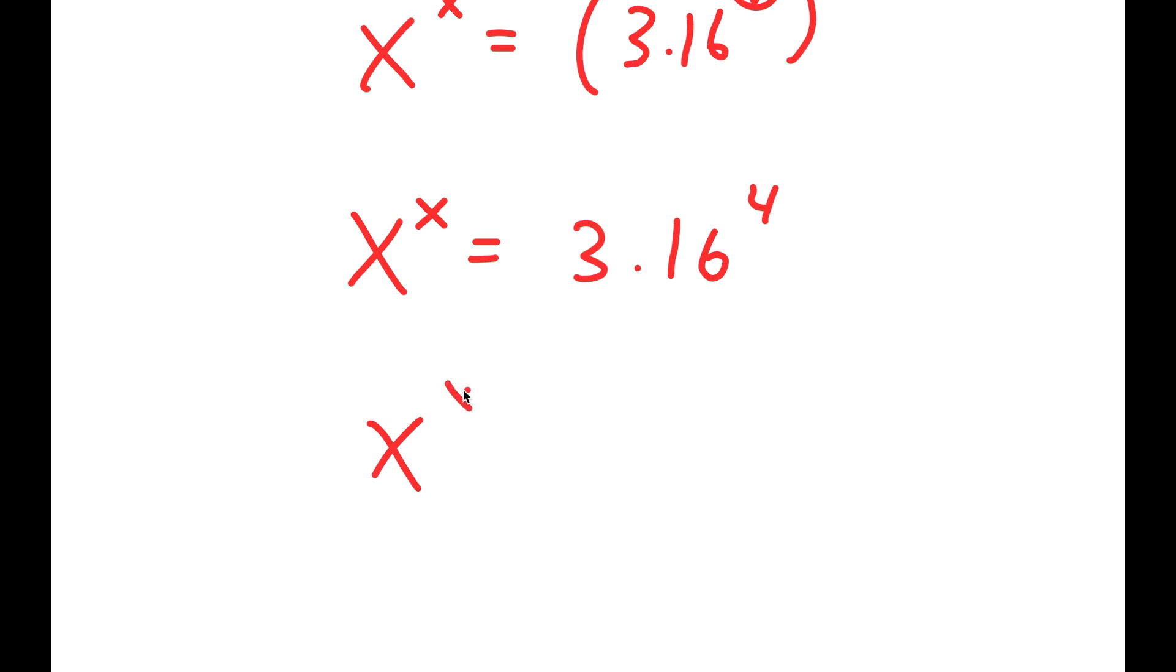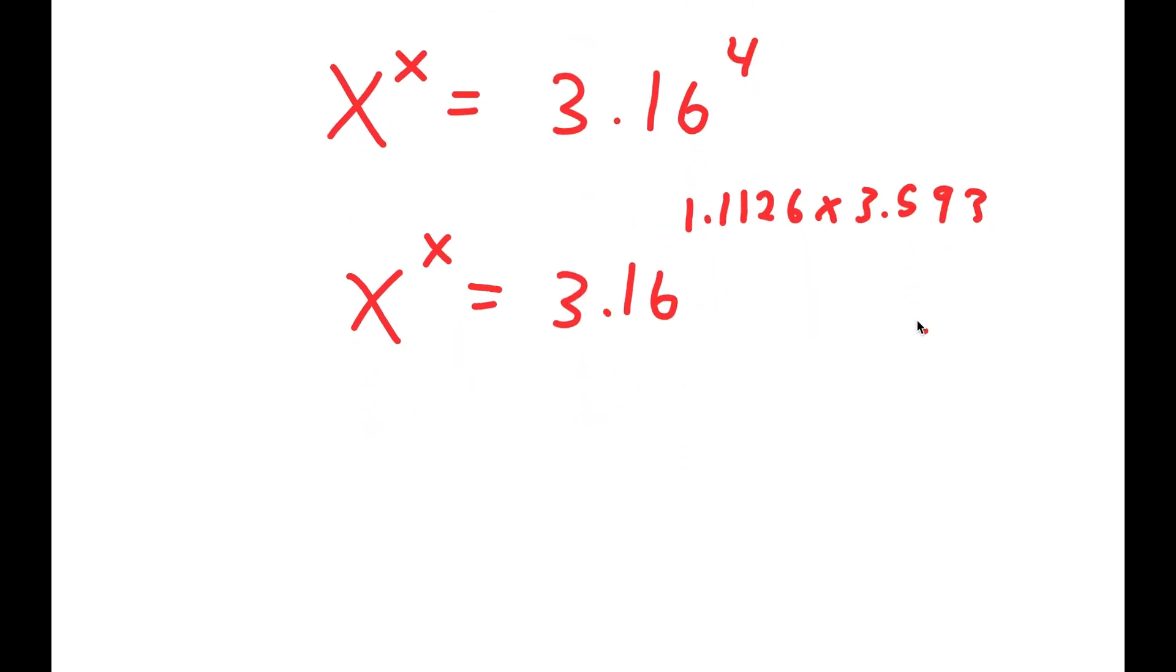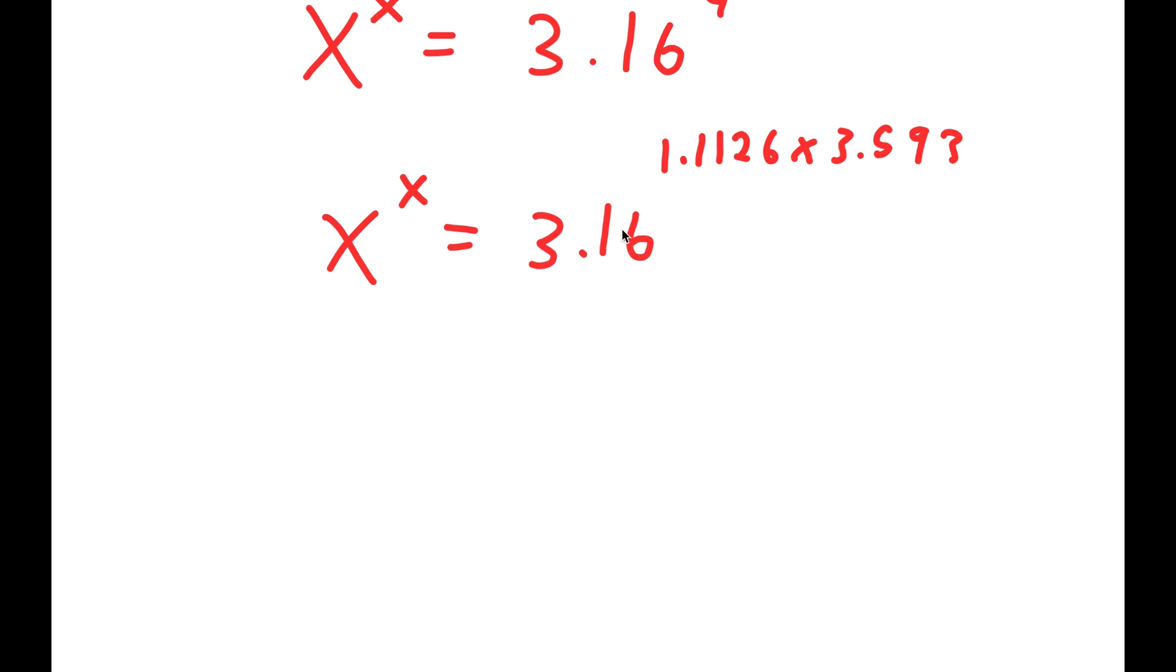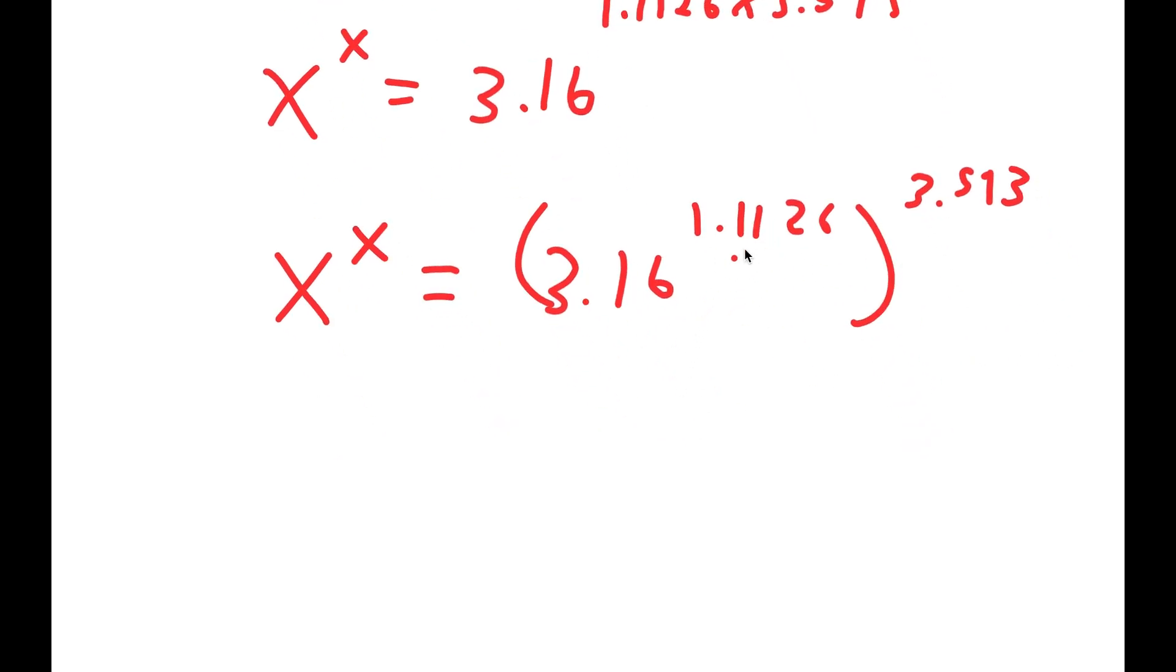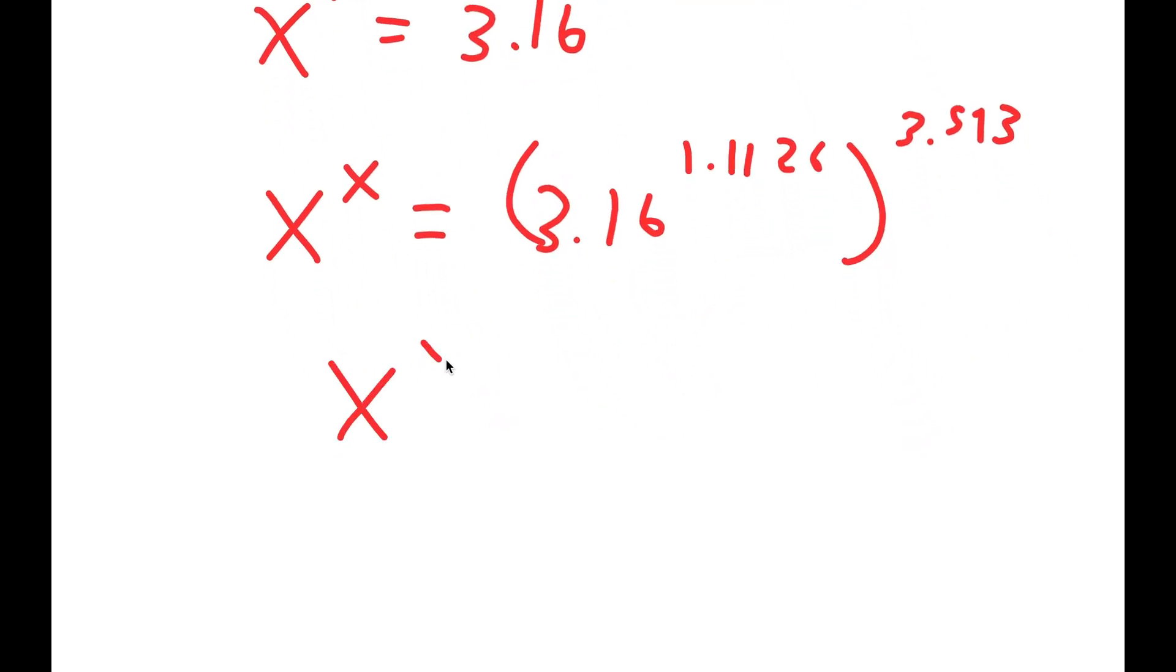I can rewrite 4 as 1.1126 times 3.593. The reason I'm doing this is so I can write this as 3.16 to the power of 1.1126, to the power of 3.593. Since 3.16 to the power of 1.1126 equals 3.593, I get x to the power of x equals 3.593 to the power of 3.593.